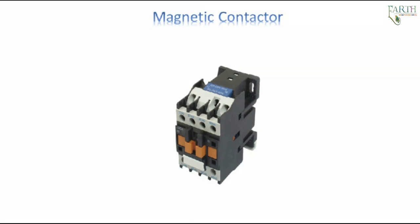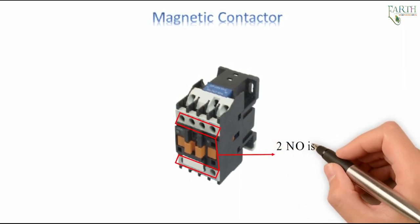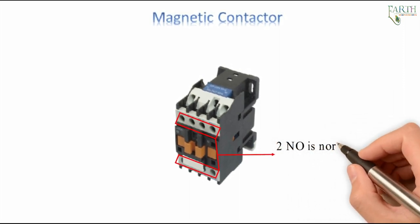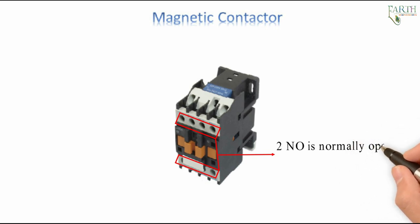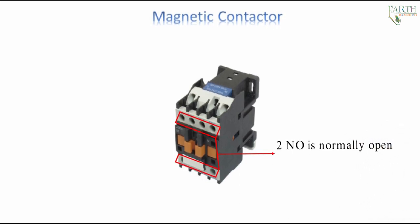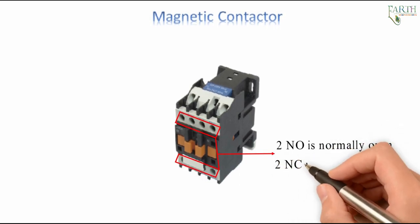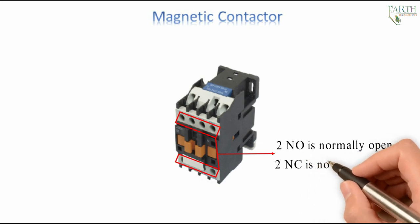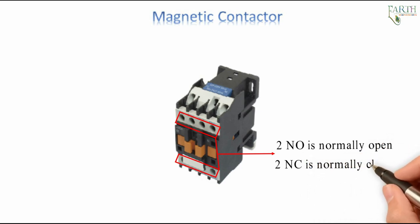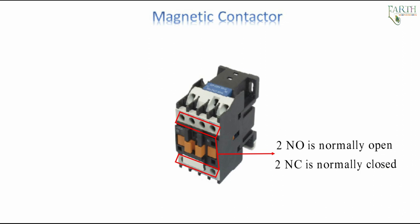It also has a set of auxiliary contacts. Generally, 2NO (normally open) means the contacts are not closed and close when the switch is actuated. 2NC (normally closed) means the contacts are normally closed and open when the switch is actuated. 2NO and 2NC are used for control wiring.